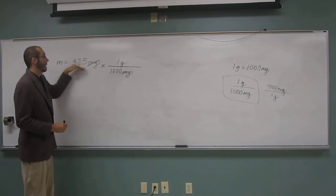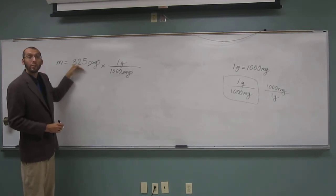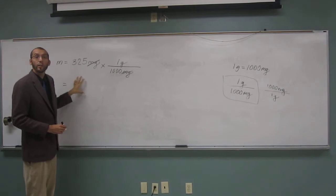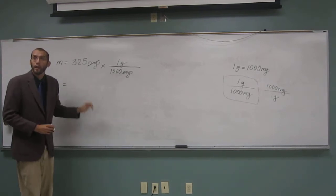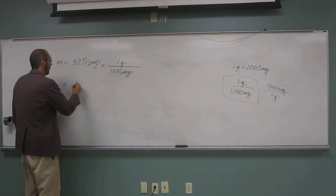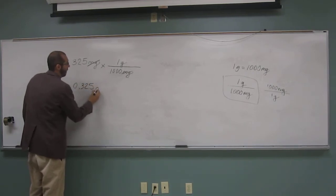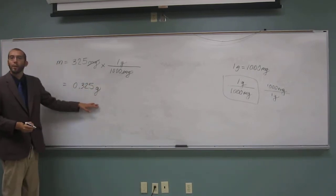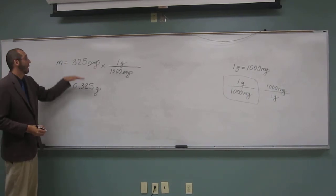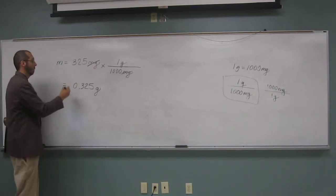So since the only number that was given to you in the problem has 3, then your answer has to have 3 as well. So when I look at my calculator, it says 0.325 grams. So that's how many grams there are in that aspirin tablet that's 325 milligrams.